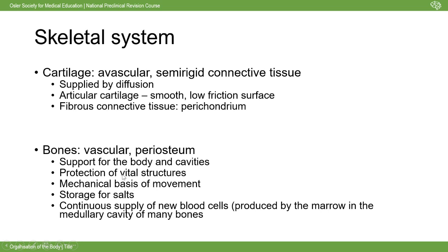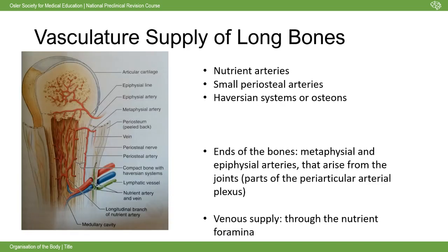Bones support the body, protect organs, and have storage of salts and nutrients. The storage function is hugely important in clinical medicine because electrolytes can move in and out of bones, changing the composition of the blood and therefore the health of a person. Bones also provide the mechanical basis of movement - leverage to move - and new blood cells are made in the bone marrow.